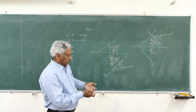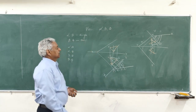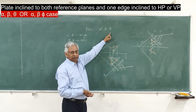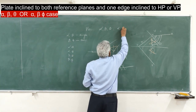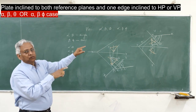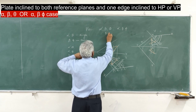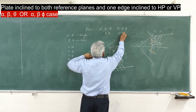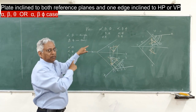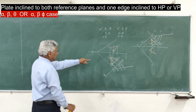Now you can add one more condition: alpha-beta-theta, meaning the plate is inclined to both reference planes and one edge of the plate is inclined to HP. Or alpha-beta-phi: plate inclined to both reference planes and one edge inclined to VP. You can solve this using either the beta-theta case, or the alpha-phi case, or the alpha-theta case and beta-phi case. These cases I have discussed in my last session, and it is very similar to this approach.